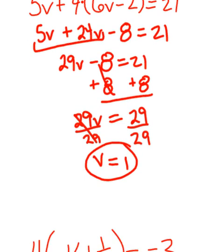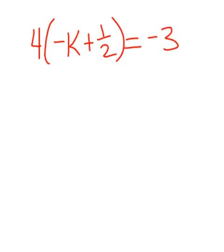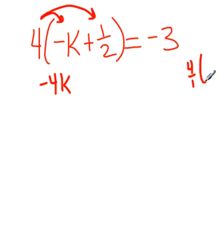And next. Still want to solve by distribution first. So 4 times a negative K is a negative 4K. 4 times 1 half. If you have to, go to the side. Let's go over here. 4 over 1 times 1 half. If you're still uncomfortable, 4 over 2 is 2. Remember, multiplication by 1 half is the same as division by 2. Bring the rest of the problem down.